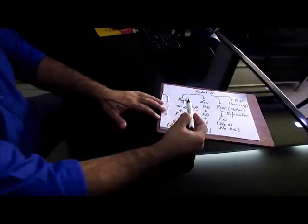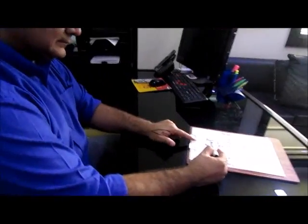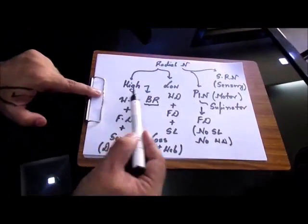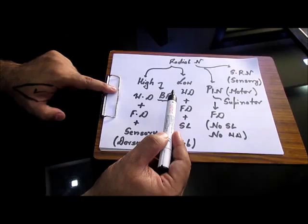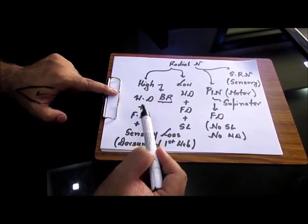Now, if you have Radial Nerve Palsy, you decide whether Brachioradialis is involved or not and you call it as High and Low. If there is only finger drop, it's a Posterior Interosseous Nerve Palsy.